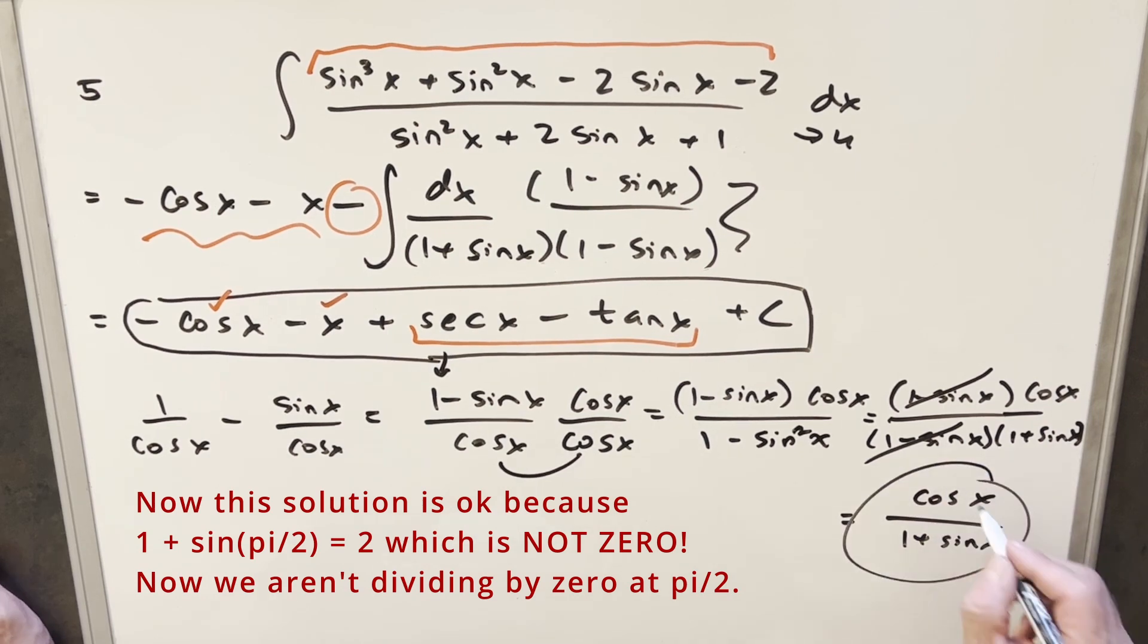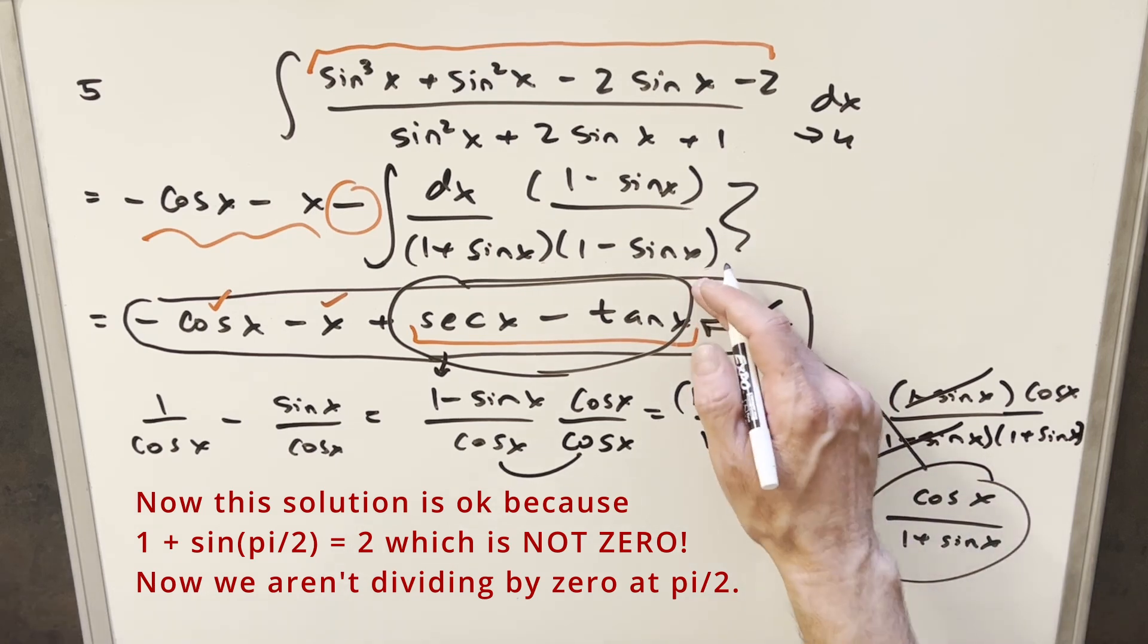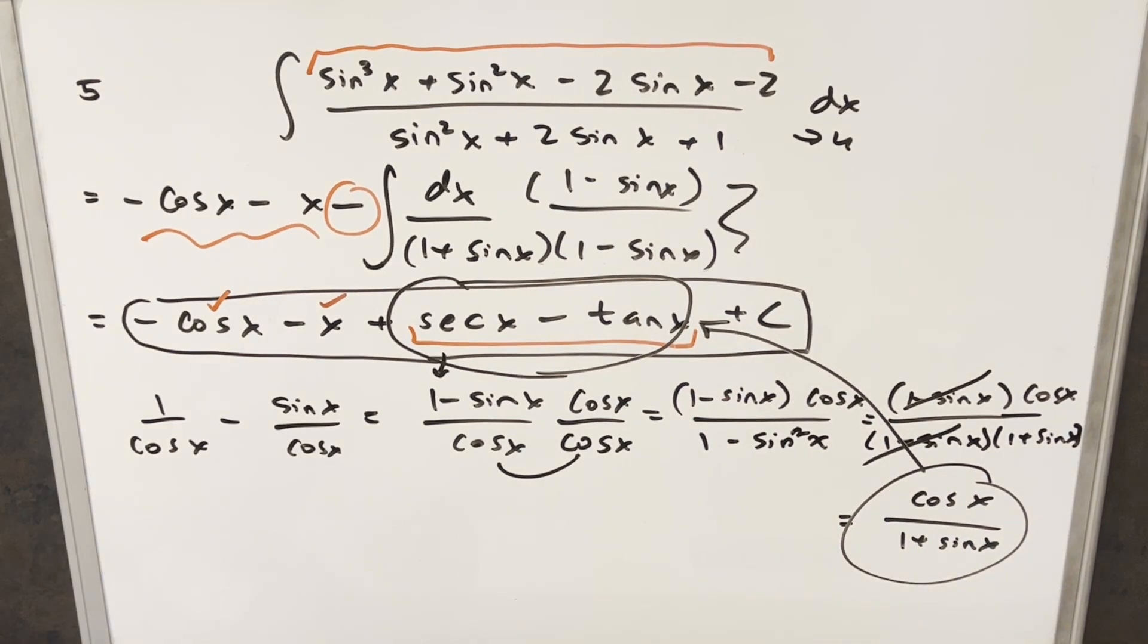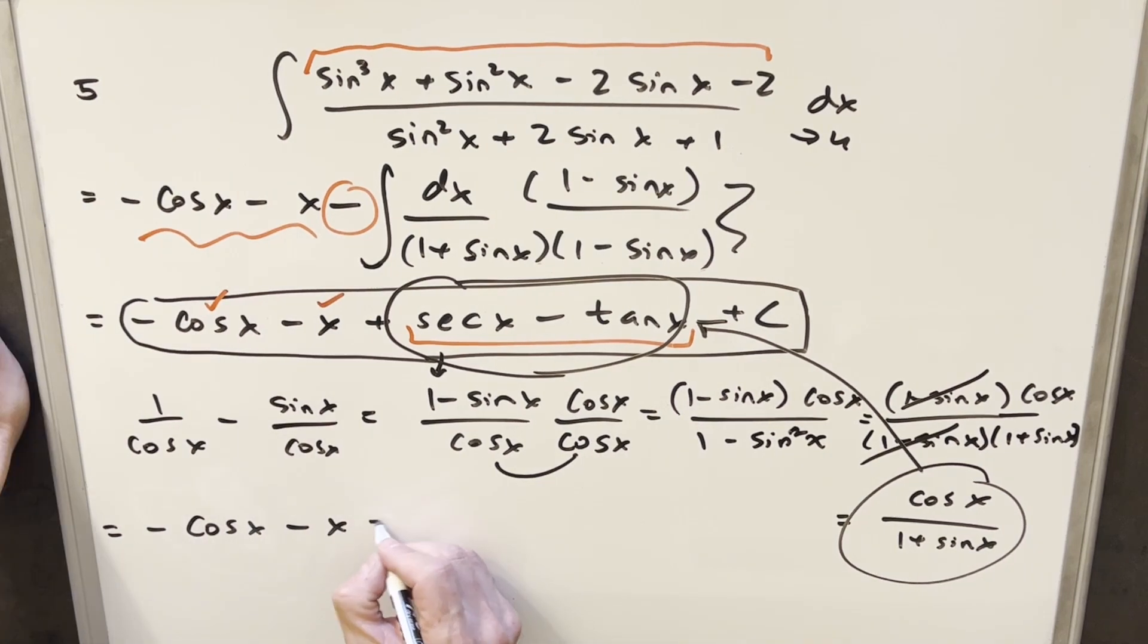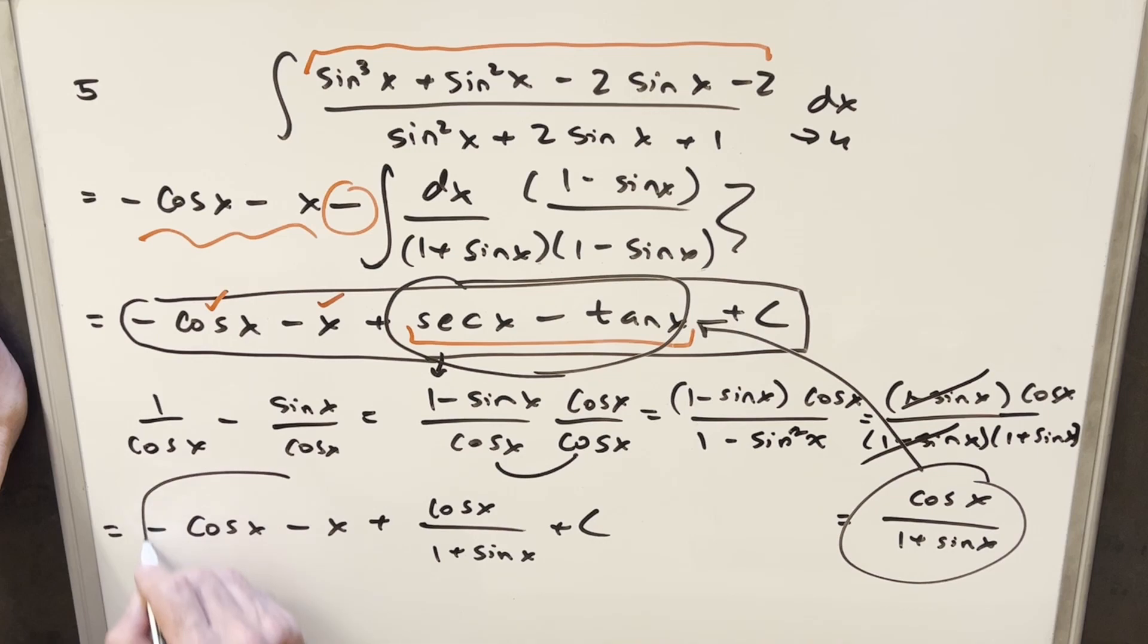And all I need to do is take that and put that back in here. And we're going to use this to replace our secant x minus tan x. Okay, and now we have our final solution. That's just going to be minus cosine x minus x plus cosine x over 1 plus sine x plus c. And that's it.